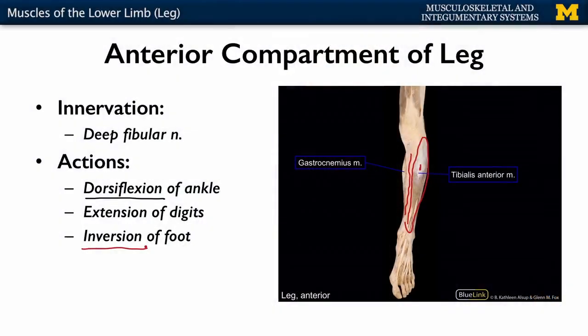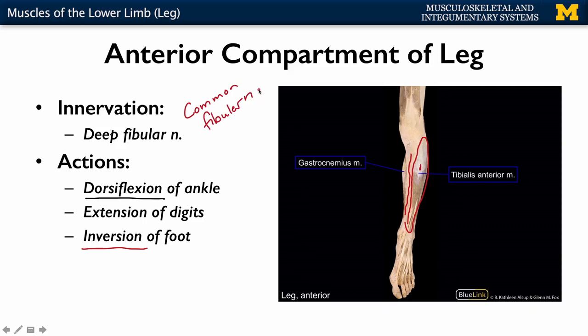All of these muscles are going to be efferently - or motor - innervated by the deep fibular nerve. The deep fibular nerve is a branch of the common fibular nerve, and the common fibular nerve is one of the terminal branches of the sciatic nerve.